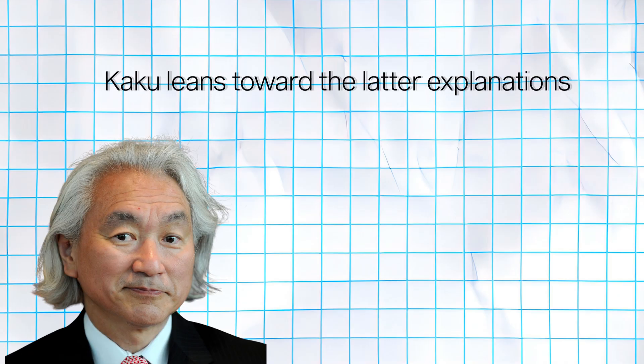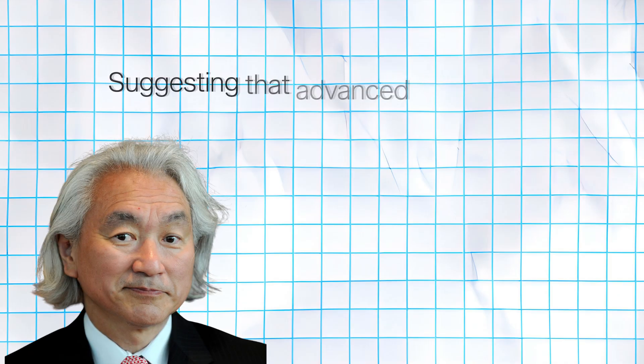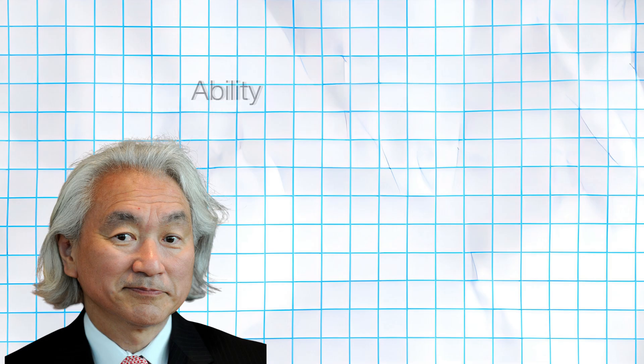Kaku leans toward the latter explanations, suggesting that advanced civilizations have either moved beyond our ability to perceive them, or are intentionally remaining hidden.